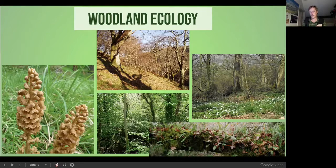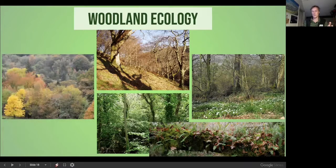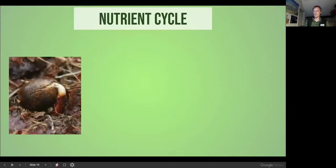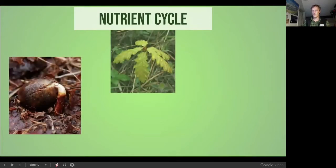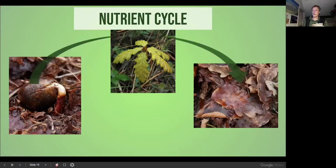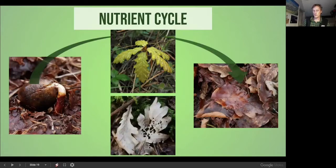In autumn, the goodness and light-absorbing pigments are removed from the leaves, stored in the tree, and repurposed into next year's buds. The leaves fall and get recycled — the acorn germinates, develops through summer, then the leaves fall in autumn and are recycled. This whole cycle is fundamental to the ecosystem.